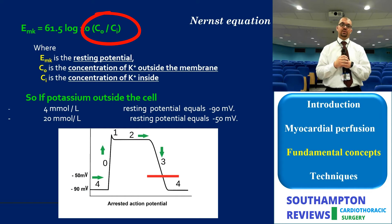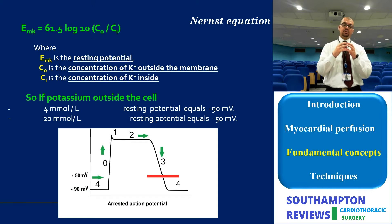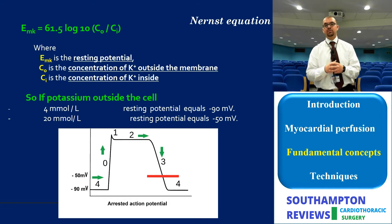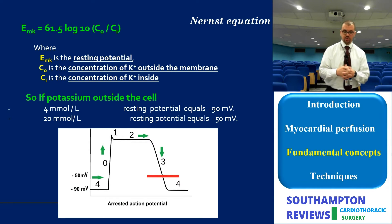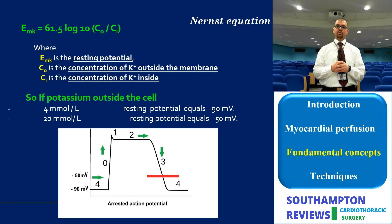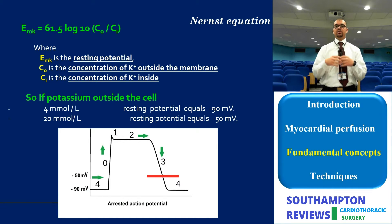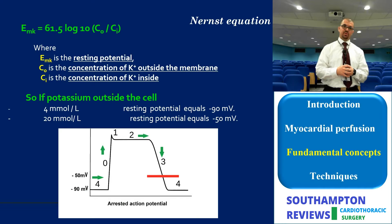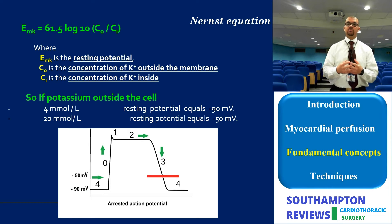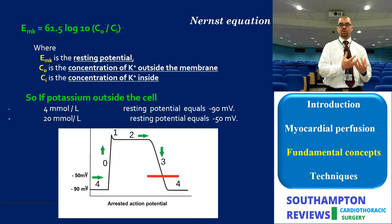If you alter the relationship between the concentration outside (C0) and concentration inside (Ci), you will lead to a different resting membrane potential. So the first proposed way of stopping the electromechanical activity of the heart was displacing the extracellular fluid with a fluid of different ionic concentration, thereby altering the resting membrane potential. This material was called cardioplegia because it stops the heart.